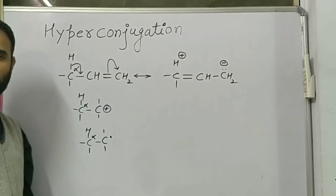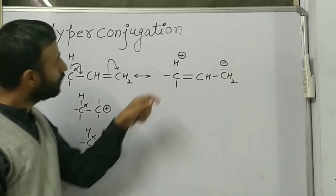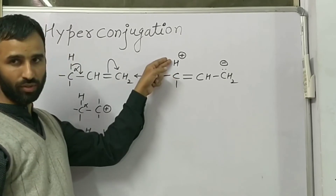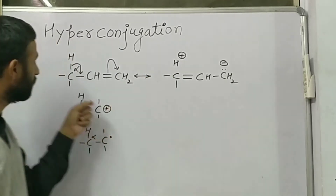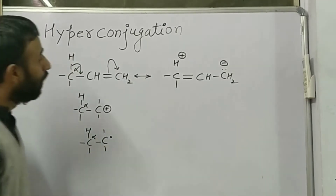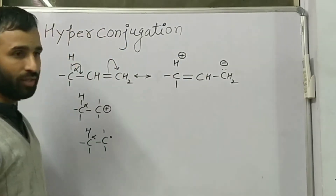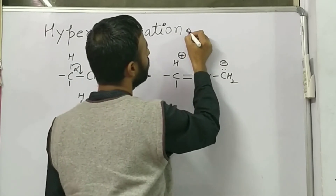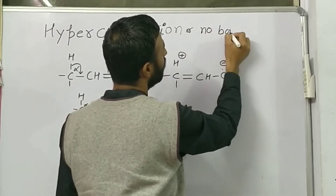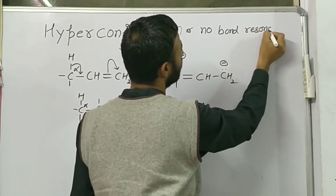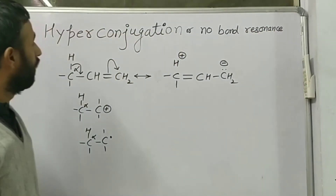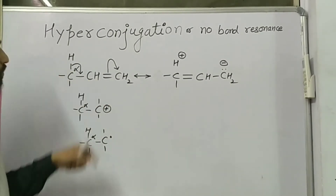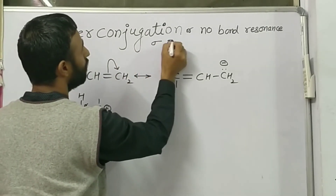We get more hyperconjugated structures from additional hydrogens. There is no C-H bond between carbon and this hydrogen, but it remains at the same distance as in the bonded state, because it is attached to the pi bond system. That is why it is also known as no-bond resonance. Since the sigma bond and pi bond are in conjugation, it is also known as sigma-pi conjugation.